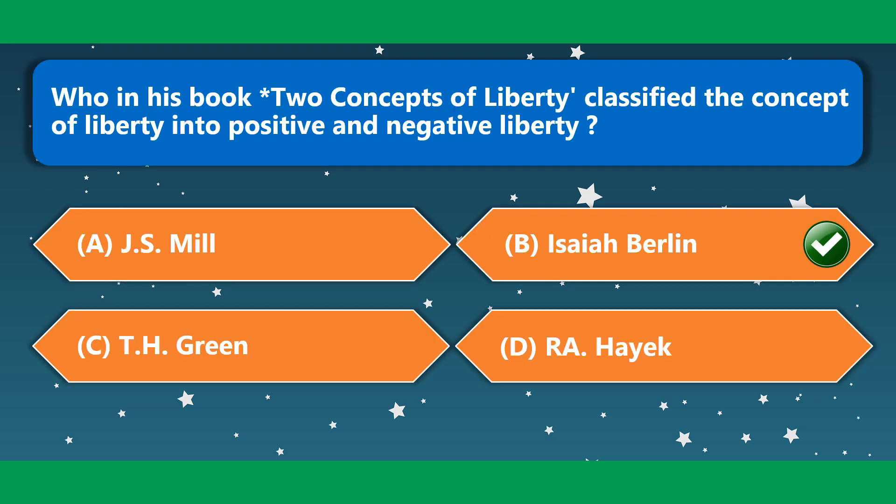Who in his book 'Two Concepts of Liberty' classified the concept of liberty into positive and negative liberty? The answer is Isaiah Berlin. Option B is the correct option.